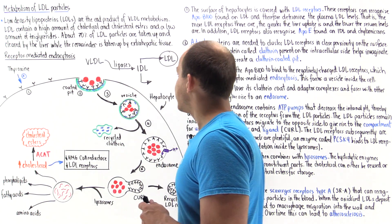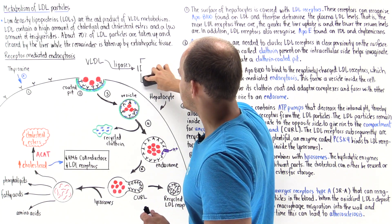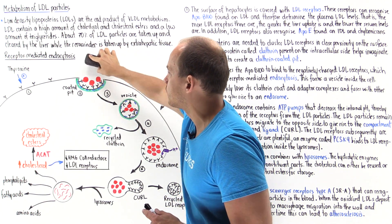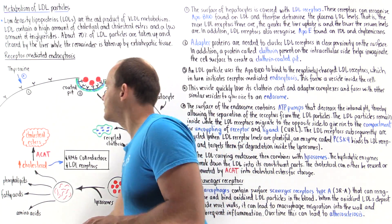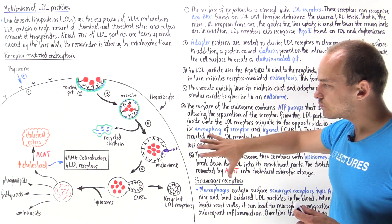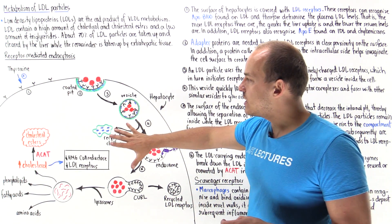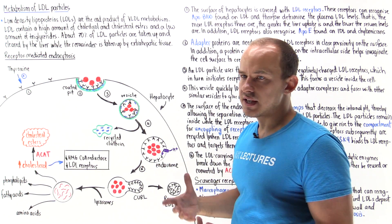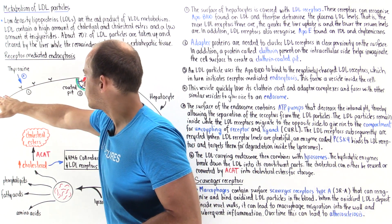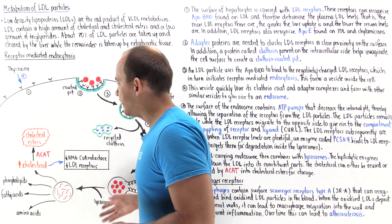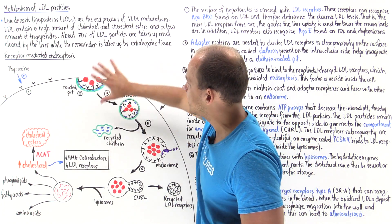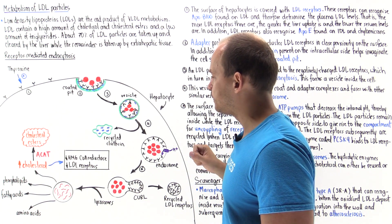In this lecture, I'd like to focus on the process by which LDL particles are absorbed by the liver. This process is known as receptor-mediated endocytosis. Here we have a diagram of the liver cell, or hepatocyte. We have the surface of the liver, the cell membrane, and then the inside of the cell — the intracellular space and the extracellular space.